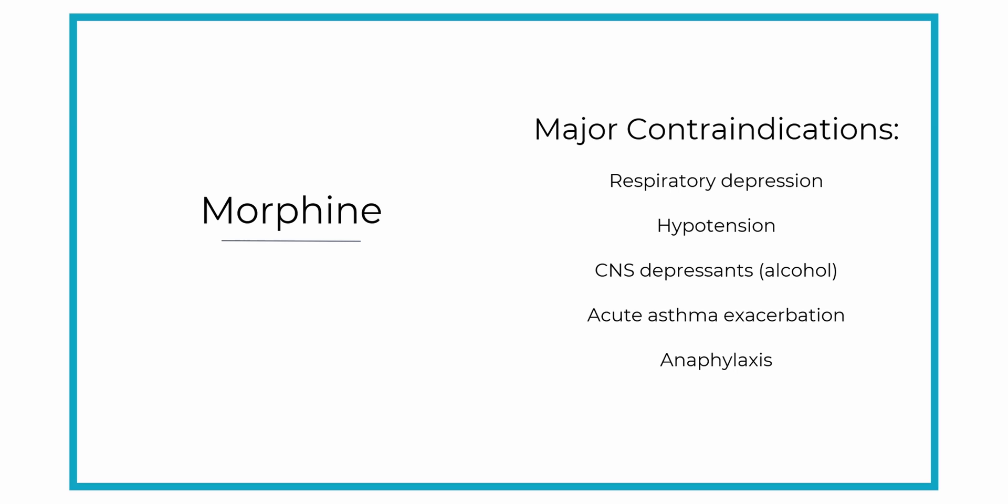For contraindications with morphine, one big thing to remember is that if the patient's respiratory rate is decreasing or is too low, morphine will just drop it down further. So a low respiratory rate is a huge contraindication for morphine.